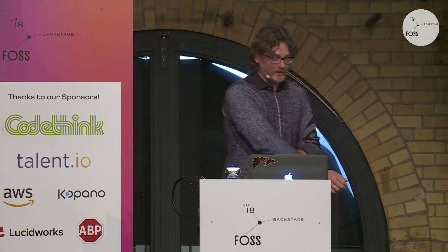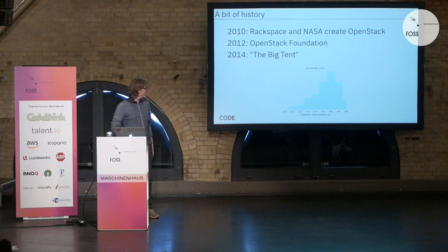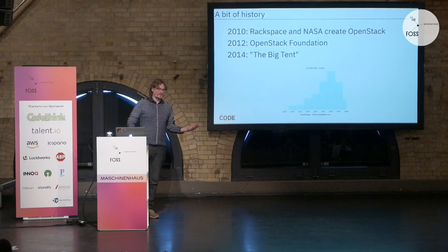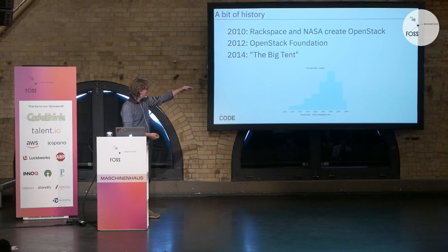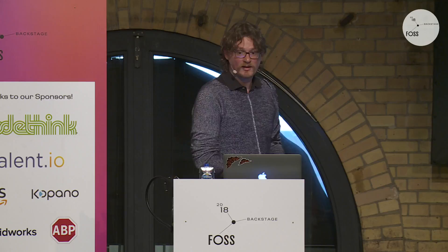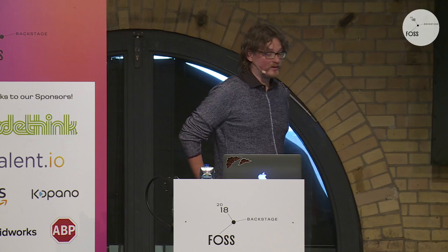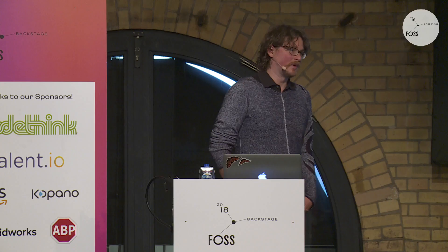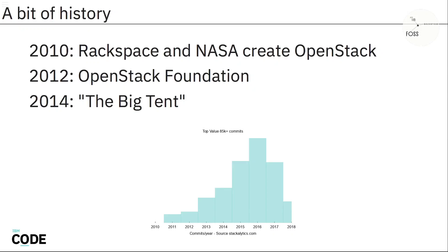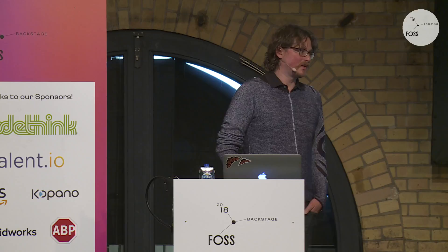The community kept gaining momentum and growing. The graph shows the total number of commits in the different OpenStack projects over the years — the top bar in 2016 is 85,000 commits, so you can see how it was growing. In 2014, there was a governance change. We used to have an incubator model where projects would not be called official OpenStack projects unless they met a number of criteria.